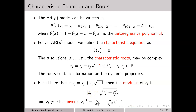What is important for our analysis is to consider the modulus of the characteristic roots. What we have shown in a previous video is that if the absolute value, or modulus, of z_j is greater than 1 for all characteristic roots, then the autoregressive model of order p is stationary and weakly dependent. For a given autoregressive model, to check for stationarity we simply find the solutions to the characteristic equation and check if those solutions have modulus greater than 1.